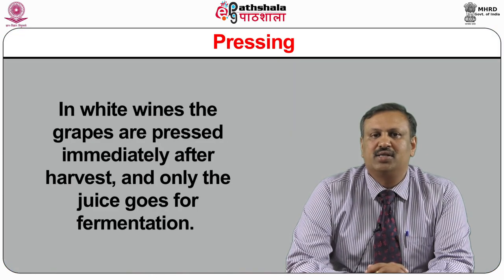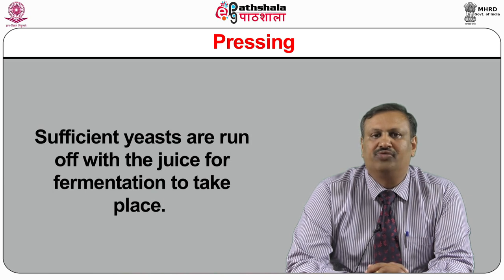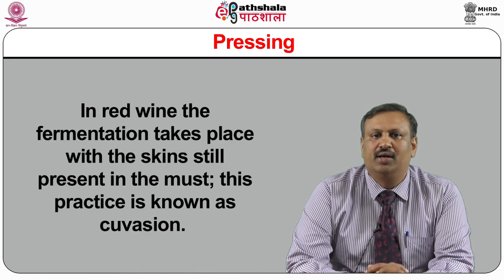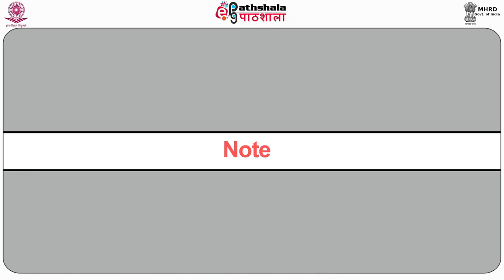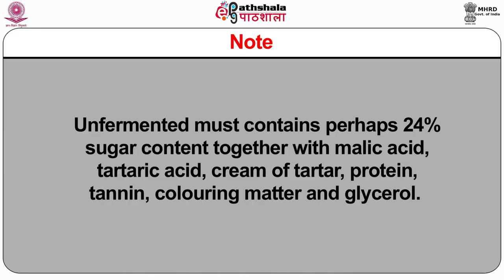Points to keep in mind while pressing: in white wines, the grapes are pressed immediately after harvest and only the juice goes for fermentation, with sufficient yeast running off with the juice for fermentation to take place. In red wine, fermentation takes place with the skins still present in the must — this practice is known as cuvaison — and skins are removed when sufficient color and tannin have been extracted. In rosé wines, the skin is kept in contact with juice for a very short time and removed as soon as the desired pinkish color is achieved. Unfermented must contains approximately 24% sugar content together with malic acid, tartaric acid, cream of tartar, protein, tannin, coloring matter and glycerol. The alcohol formed is ethyl alcohol or ethanol, and its percentage depends on the sugar content of the must and the variety of yeast.